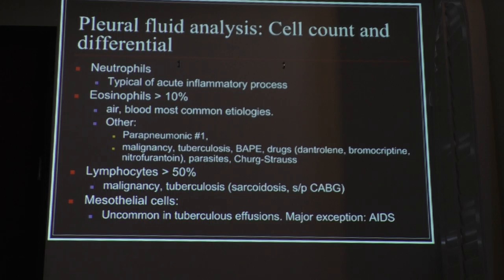Remember Dressler syndrome? After a thoracotomy or sternotomy, you can develop a form of pericarditis. The same thing happens in the lungs — you can actually get a lymphocytic effusion after CABG. And if you see mesothelial cells, you think about either mesothelioma or a tubercular effusion.